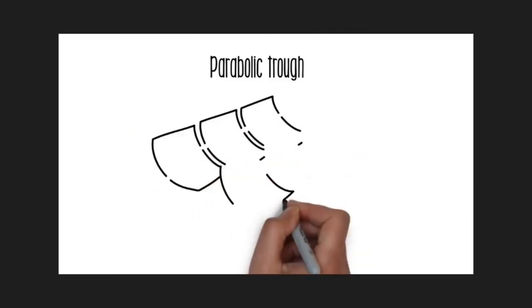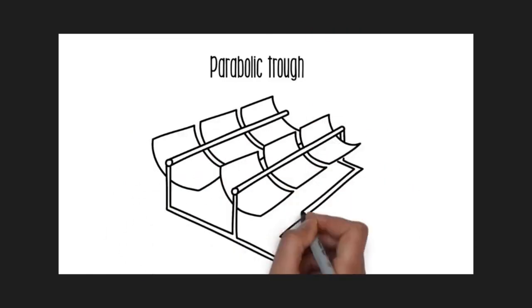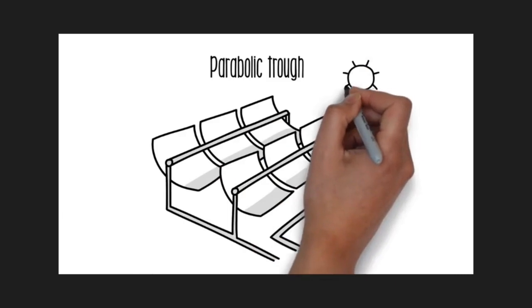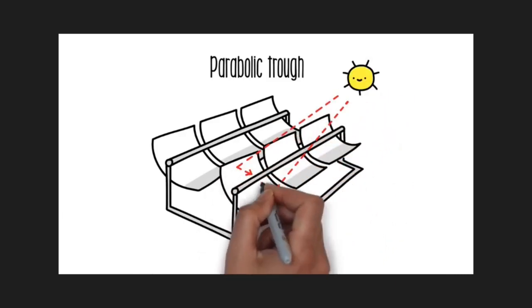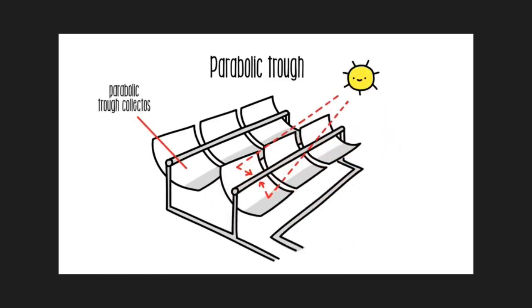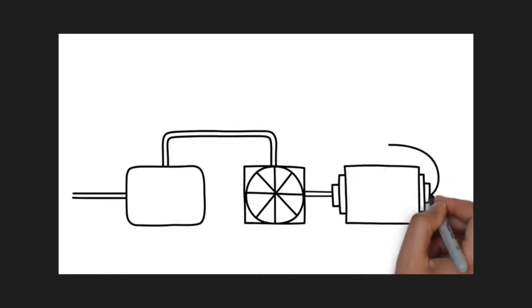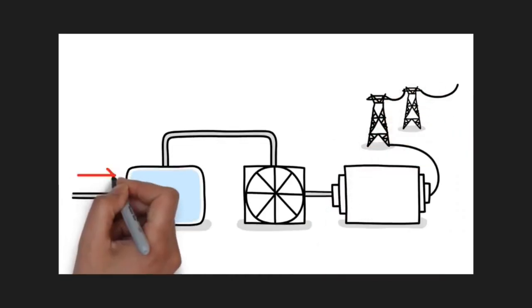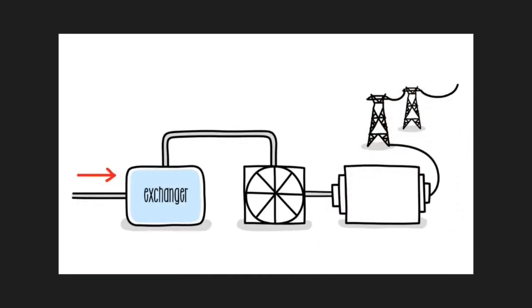In parabolic trough technology, mirrors are used to reflect and concentrate solar radiation onto a pipe located in the focal line. Inside the tube, a thermal fluid is heated to nearly 400 degrees Celsius. Then in an exchanger, it transfers its heat to the water stored there and transforms it into steam. The steam drives a turbine connected to a generator to produce electricity, then is cooled down to start the process again.